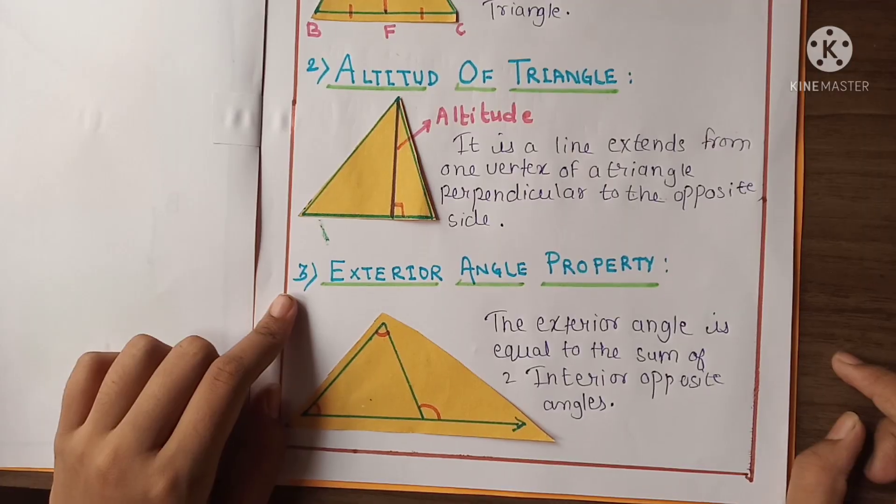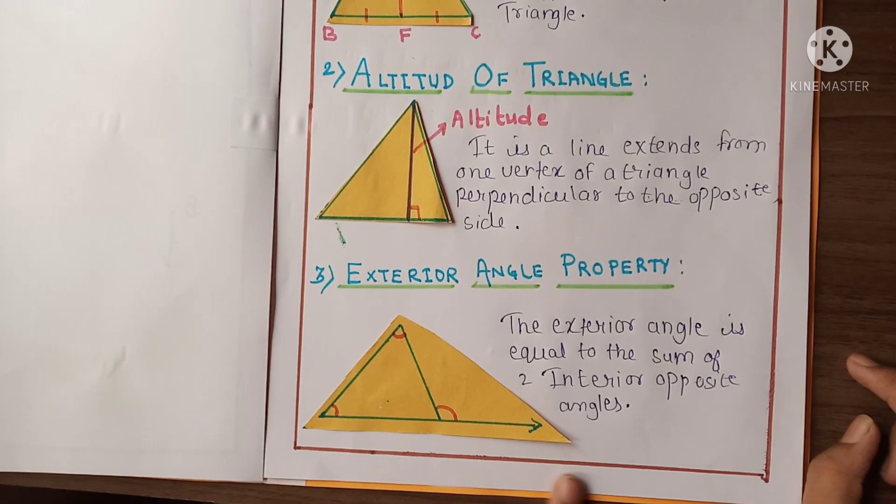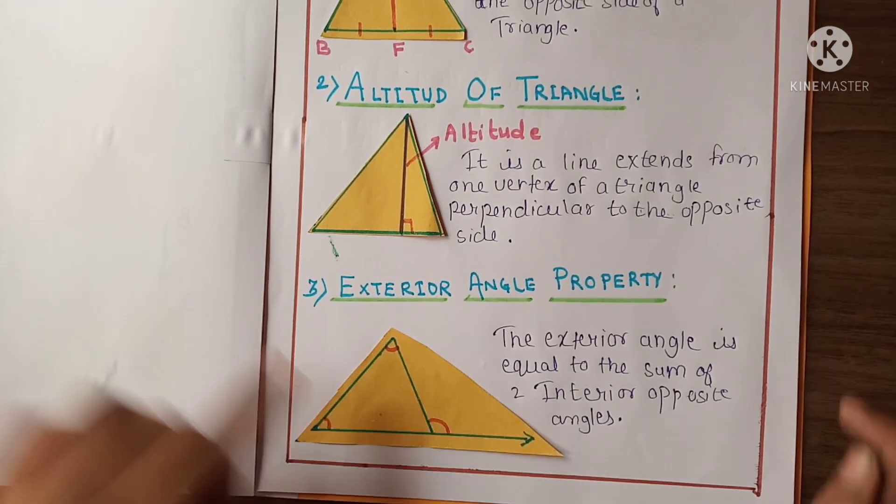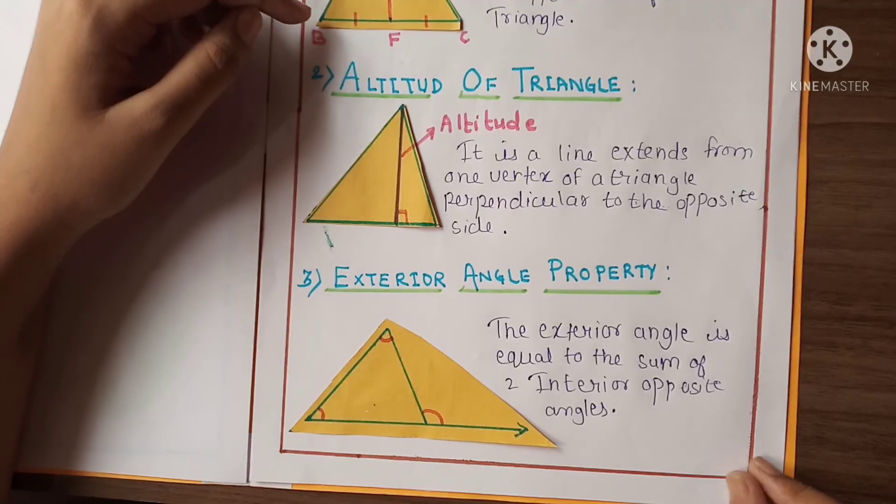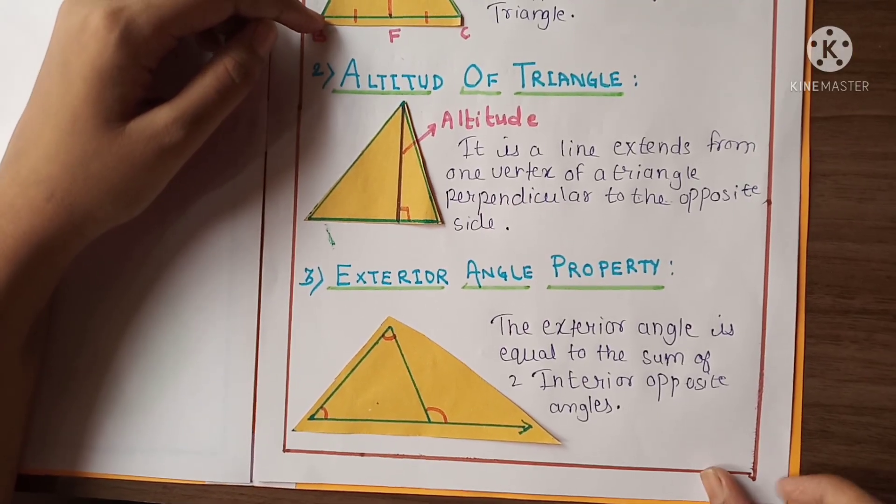And here third is exterior angle property. And here is the diagram. Here is the exterior angle. The exterior angle is equal to the sum of two interior opposite angles.